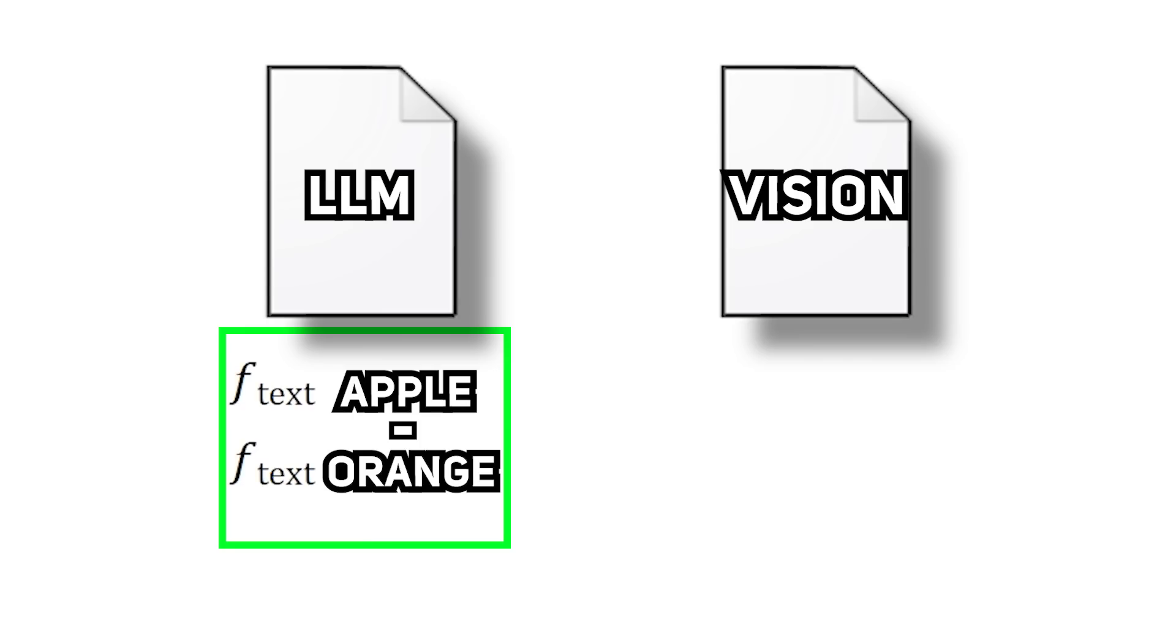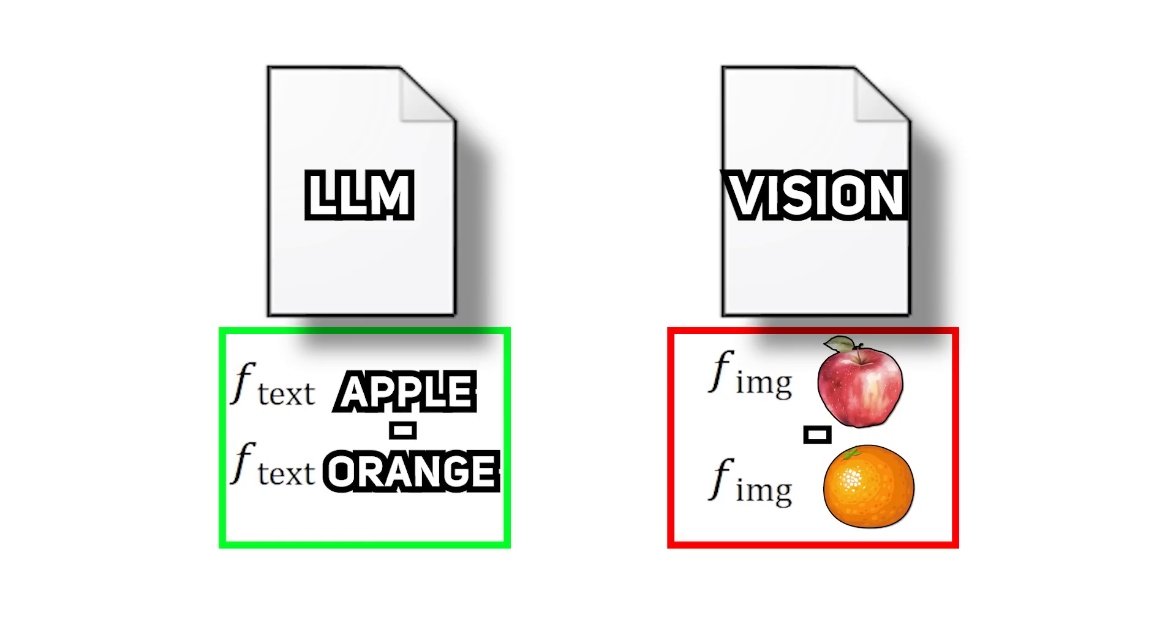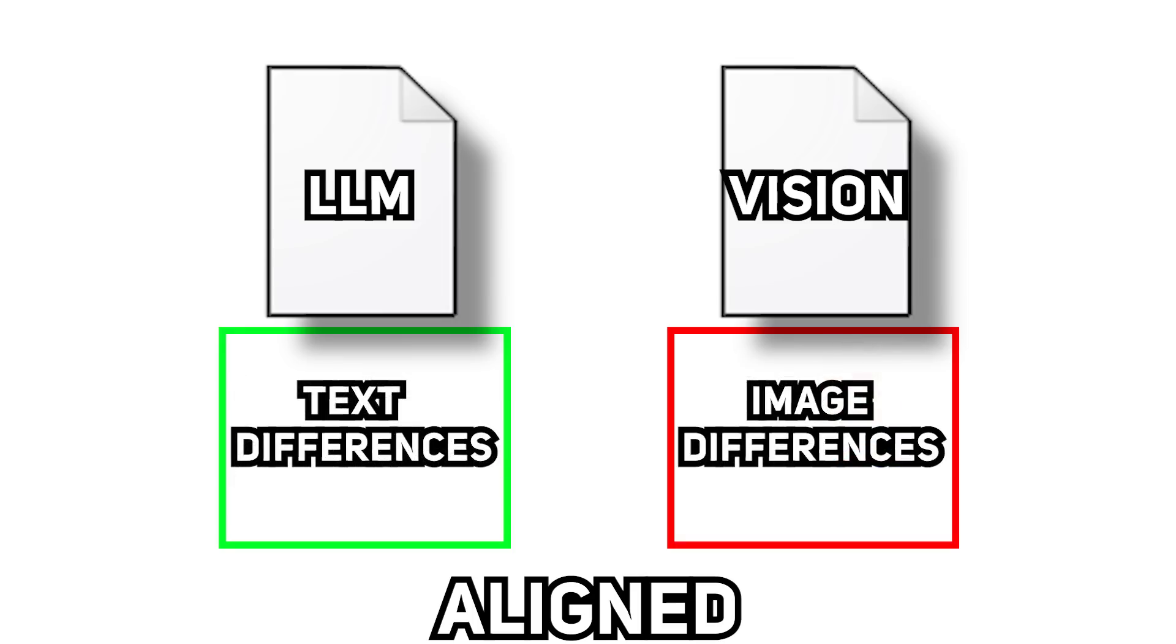For example, let's say we have two foundation models, one is an LLM and the other is a vision model. We then measure the distance between the input text, apple and orange in the representation space of LLM, and measure the distance between the concept of an apple and an orange in the representation space of the vision model.